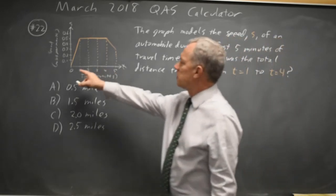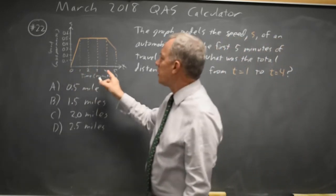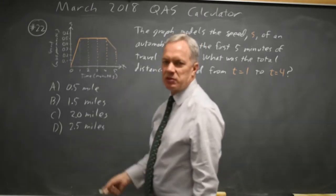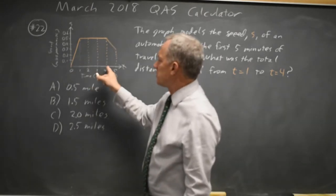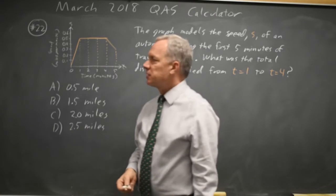Notice this is not the total distance over the entire graph where you might have to play with the area of the triangle and trapezoid. This is just from time 1 to time 4 and that's a rectangle.